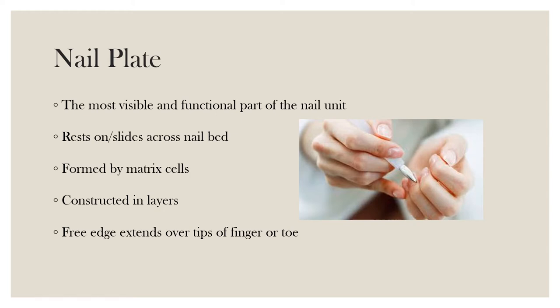As it grows, the nail plate slowly slides across the nail bed. The nail plate is formed by the matrix cells — the sole job of the matrix cells is to create nail plate cells. The nail plate may appear to be one solid piece but is actually constructed of about a hundred layers of nail cells. The free edge is the part of the nail plate that extends over the tip of the finger or toe.